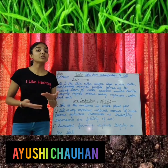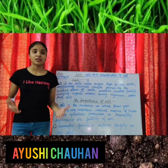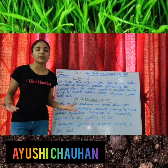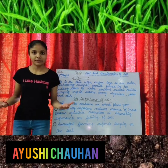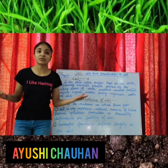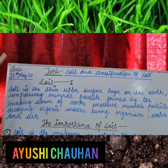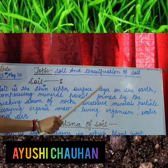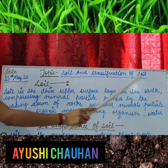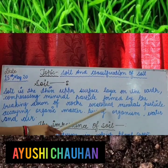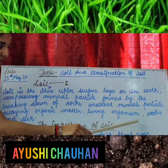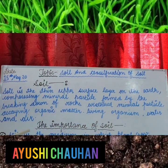The uppermost layer of earth's crust which is loose, fermented and useful for growing crops is known as soil. Soil is the thin upper surface layer on the earth composing mineral particles formed by the breaking down of rocks, weathered mineral particles, decaying organic matter, living organisms, water and air.